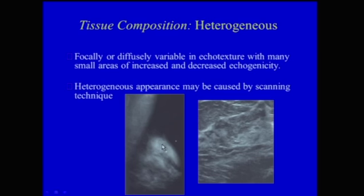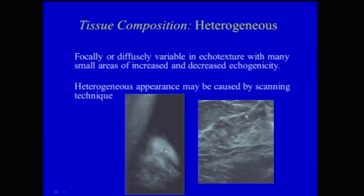Or we could describe the tissue as heterogeneous — either focally or diffusely variable in echotexture with many small areas of increased and decreased echogenicity. On the mammogram mediolateral oblique projection, you can see a heterogeneous breast density with areas of fibroglandular tissue and areas of fat, corresponding with the adjacent ultrasound showing subcutaneous fat and an area of echogenic tissue with hypoechoic areas of fat within the fibroglandular tissue.